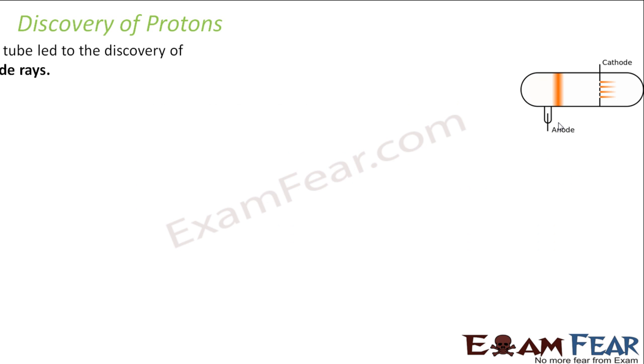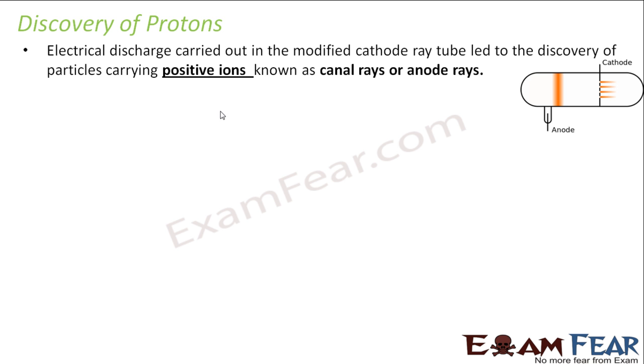The proton was discovered through anode rays. There is something called anode rays just as we have cathode rays. Similarly, we have anode rays and this is nothing but a modified cathode ray tube where we have positive ions.